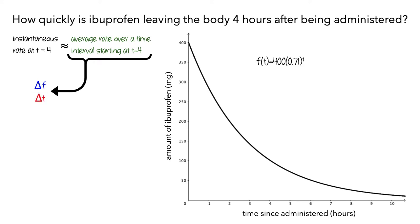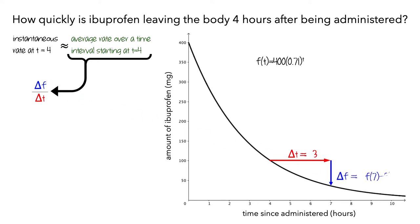To start, we'll use a 3 hour change in time. On the graph, delta t can be represented by the length of a red arrow from the point on the function at time 4. Here, delta t is 3. Delta f would be the corresponding length of a blue arrow, which we compute by subtracting f evaluated at 4 from f evaluated at 7. So the average rate is the change in the values of the function, divided by 3.